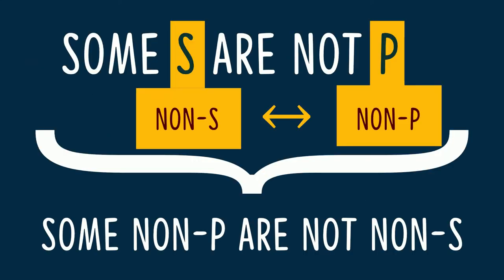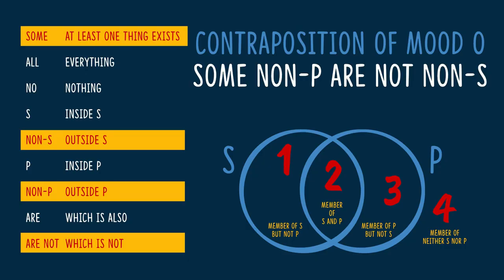Now let's go to something more complex — the contraposition of Mood O. Contraposition involves switching the predicate and subject classes and then taking complements of each. A Mood O statement is some, S, R-not, P. The contraposition first swaps P and S to get some, P, R-not, S. The second step is to take the complement of those two classes, giving us some, non-P, R-not, non-S. Think about having to diagram some, non-P, R-not, non-S quickly — that might be kind of hard to conceptualize.